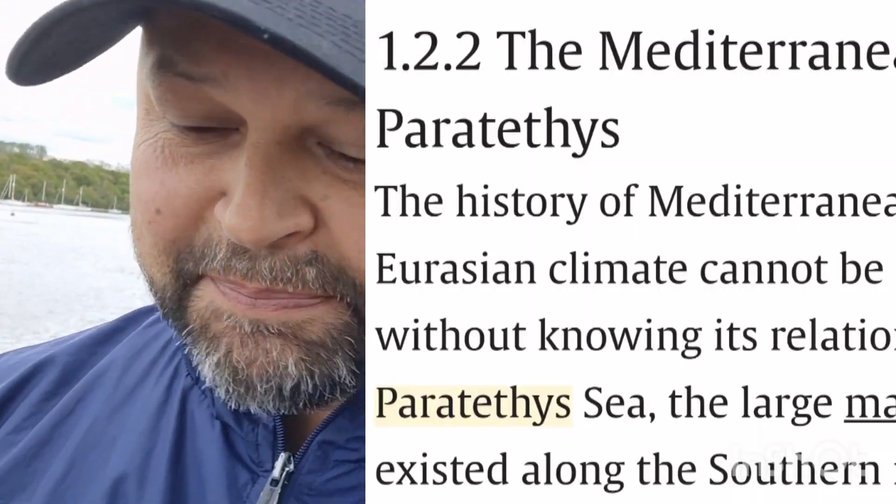They insist on indoctrinating people — claiming the earth is a ball, that it's spinning, and preaching in universities that the Caspian was once part of a larger ocean called the Paratethys, which then divided and left the Caspian separated from the Mediterranean. These are theories they teach and preach in schools and universities because they refuse to tell the truth. The truth sets us free, brings us closer to God, and brings light to people — which is not what they want. They want people who don't know anything but still think they are smart.